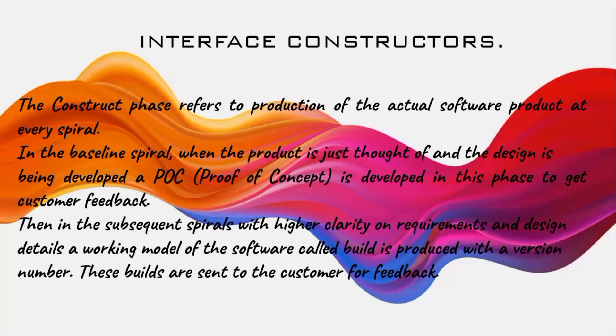In the baseline spiral, when the product is just being thought of and the design is being developed, a Proof of Concept (POC) is also developed. Assume you have created a particular design and show it to the customer. If the customer approves the design, they confirm it is acceptable and request you to continue. That customer approval serves as the Proof of Concept. In the future, if any dispute arises about the accepted design, this document proves the customer accepted it. That document is called the Proof of Concept.